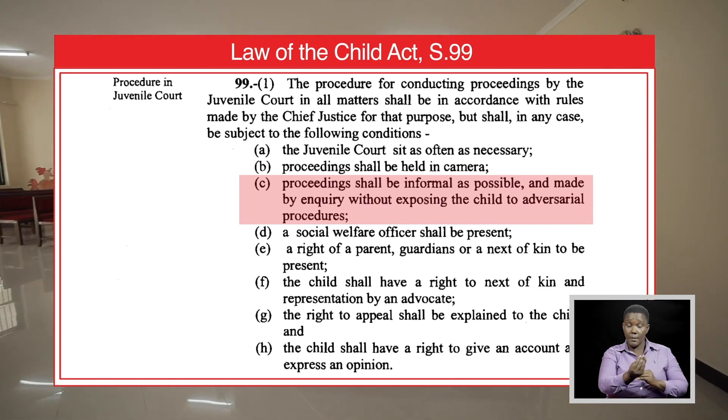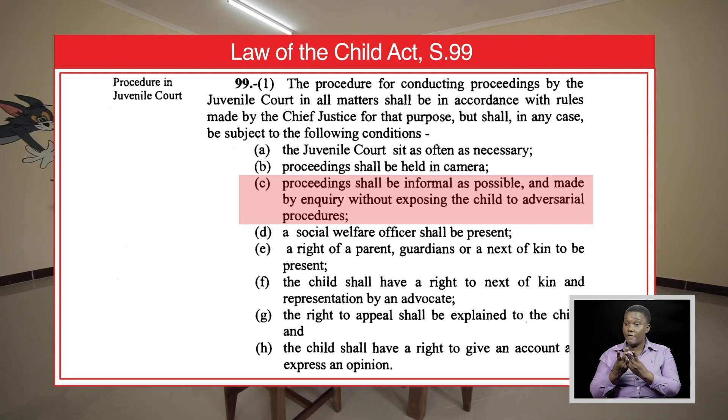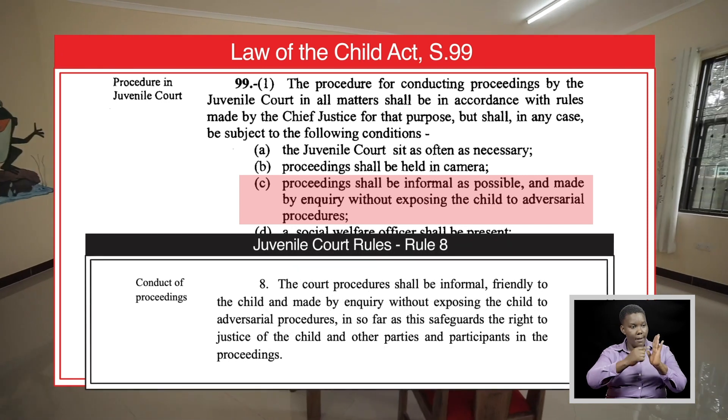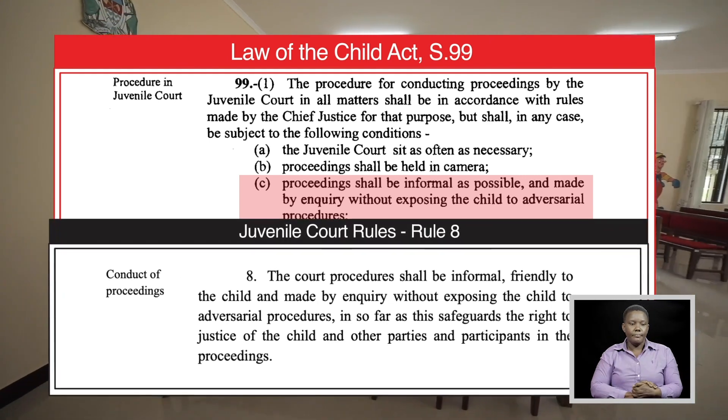Proceedings shall be as informal as possible and made by inquiry without exposing the child to adversarial procedures. Rule 8 of the juvenile court rules supports this. The proceedings should be as simple as necessary and should not subject the child to the intricate proceedings that we have in normal adult courts.